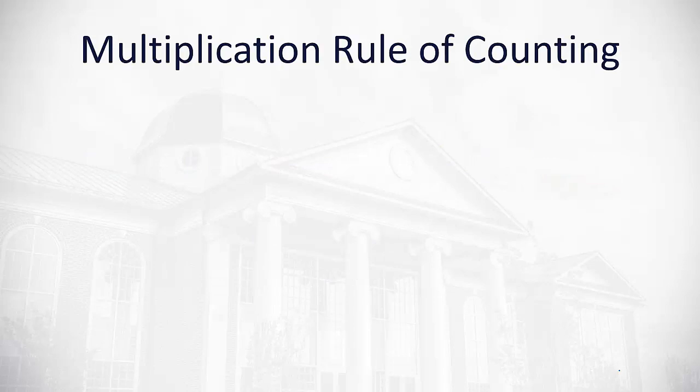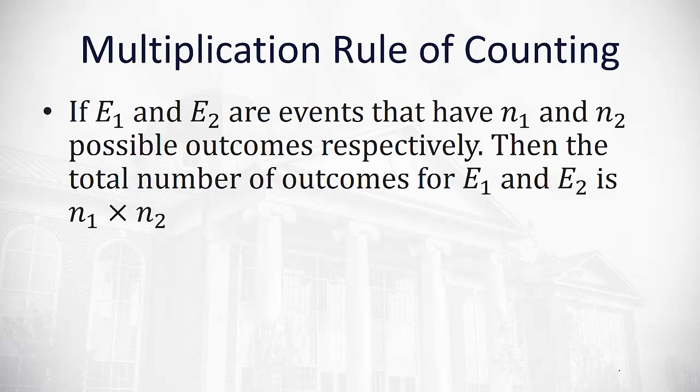First, we'll discuss the multiplication rule of counting. The multiplication rule says that if E1 and E2 are different events that have n1 and n2 possible outcomes, respectively, then the total possible outcomes is going to be the product of the number of options for each event.